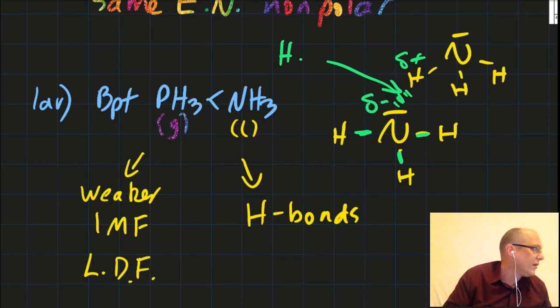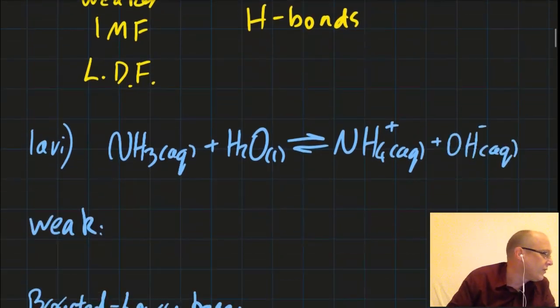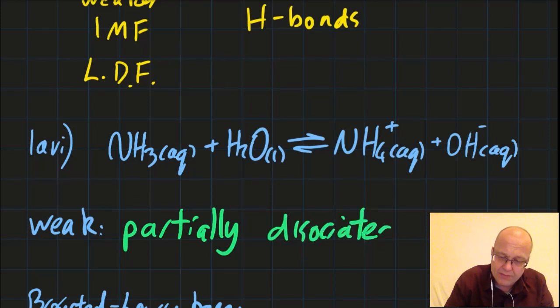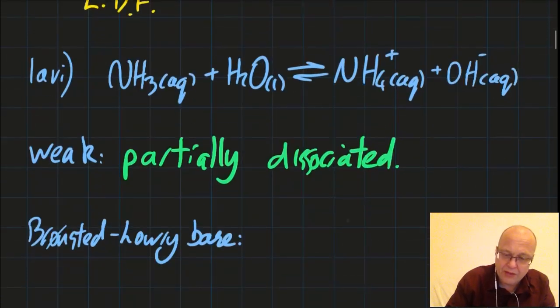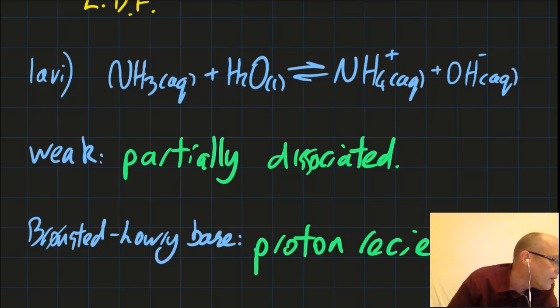Ammonia acts as a weak Bronsted-Lowry base when dissolved in water. What's meant by weak? So weak means it's partially dissociated. Maybe only one in a thousand of the ammonia molecules grab that proton. It's a Bronsted-Lowry base because it's a proton receiver. Acid is a proton donor.